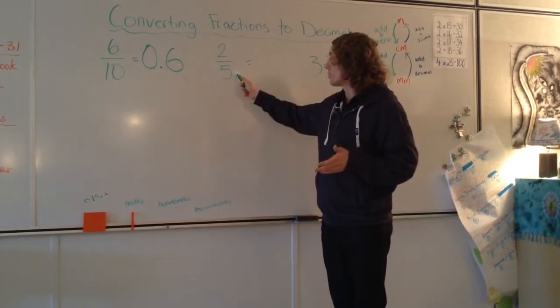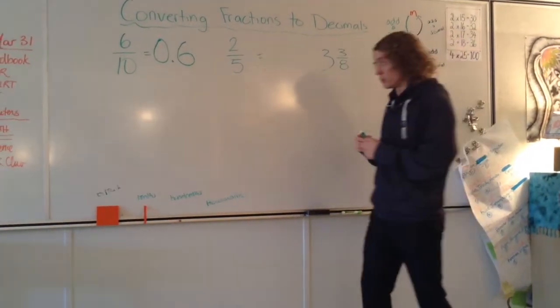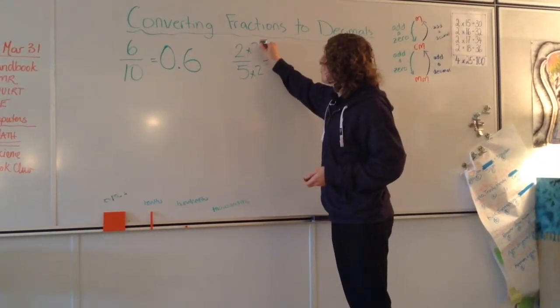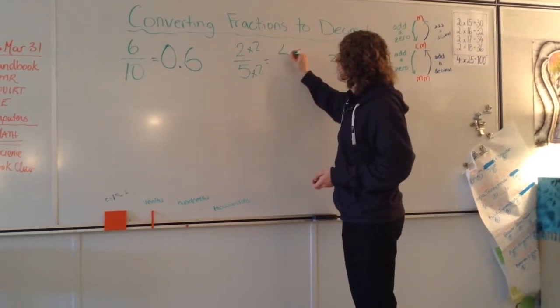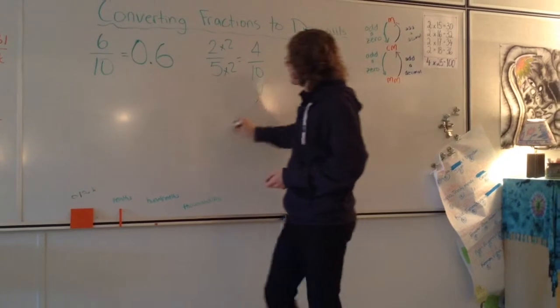The way that we do that is we multiply this to make it into a 10, but what we do to the bottom we have to do to the top. So I'll multiply this bottom number by 2 and the top number by 2, which will give me 4/10. Now if you look back at this first example right over here, you see that it's...